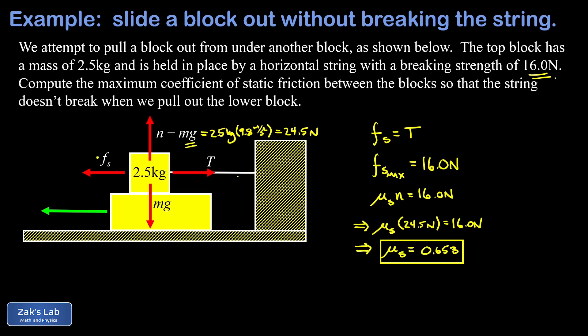For our coefficient of static friction. This is going to make it so we get right up to that breaking strength of 16.0 newtons in the string right when the thing breaks loose, and we'll be able to pull out the big block from underneath the 2.5 kilogram block.